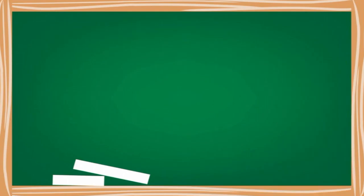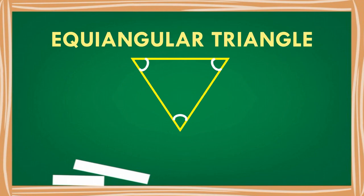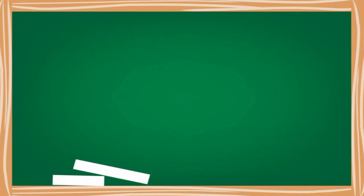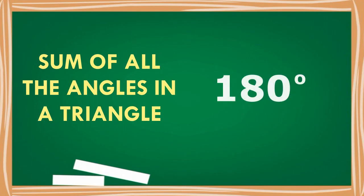Those are the kinds of triangles — very easy to memorize, right? Now let's take a look at a special kind of triangle. This is an equiangular triangle. Obviously, all of its angles are equal. Now, talking about angles in a triangle, the sum of all angles in a triangle is equal to 180 degrees.